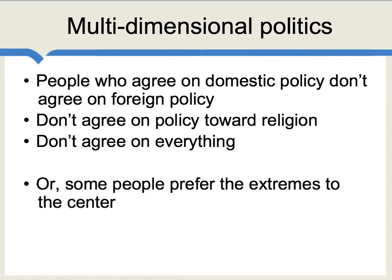If you'll recall, in the single-dimensional model, if an individual stakes out a right-wing stance on domestic policy, that means they have a right-wing stance on foreign policy, on social policy, and on all the other issues. There's one line along which everyone stands, but here we're saying that people don't always agree with each other on all the different issues.